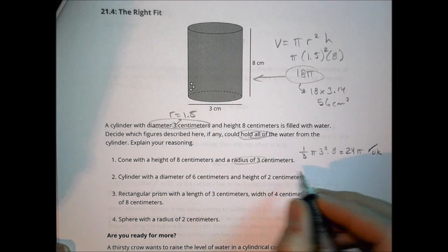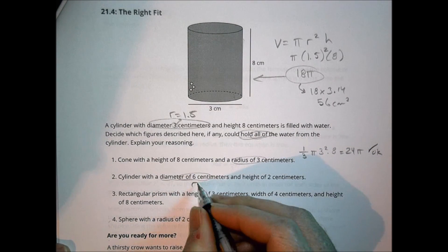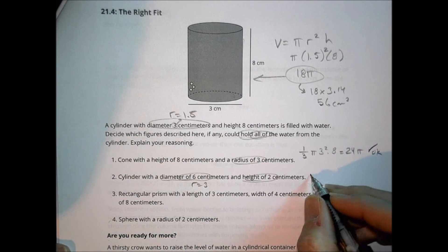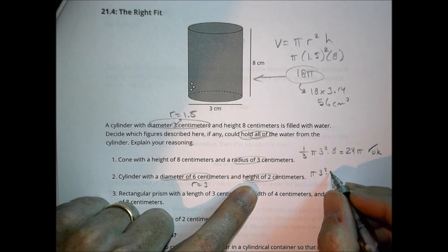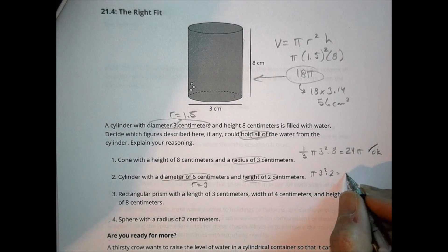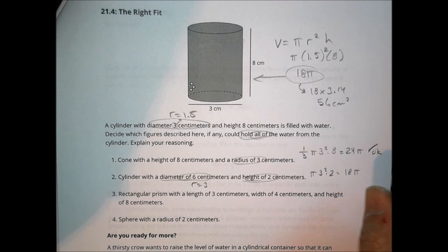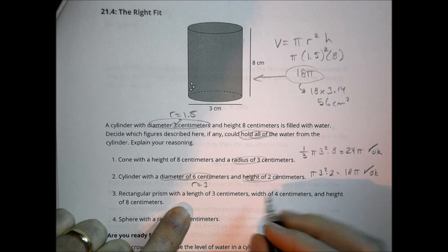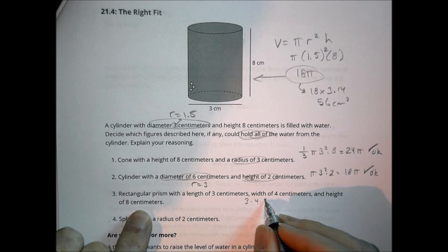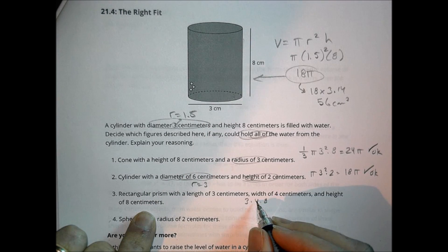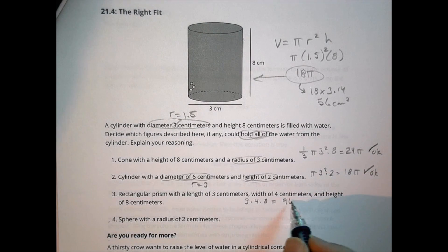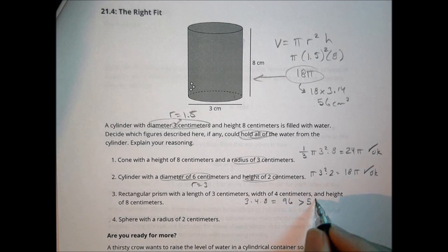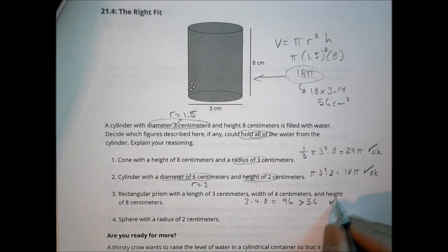Cylinder. Cylinder, we have diameter of six, which makes our radius equal to three and a height of two. So we'll do pi times the radius, three squared times the height of two. Three squared is nine. Nine times two is 18. So we have 18 pi. 18 pi can hold 18 pi. So that's going to be okay. Taking a prism. Prisms are going to be three times four times eight. Three times four is 12. And 12 times eight is going to be equal to 96. And there's no pi here. So it's good to look back up here at 56. 96 is greater than 56 centimeters cubed. So that's going to also be okay.